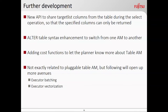For further development: first, a new API to share target list columns from the table during the select operation, so only the specified columns are returned. This is one of the needs from columnar storage as well — even though they have implementation to store all columns, the selection of data can be optimized if they know which particular columns are needed by the query. Currently, when a scan is requested, the table AM methods don't share information about what columns have been requested. Fujitsu identified this need and was proposing a patch; Zstore needs this change too. Unfortunately it's not possible in PG-12, but in PG-13 it might be available.